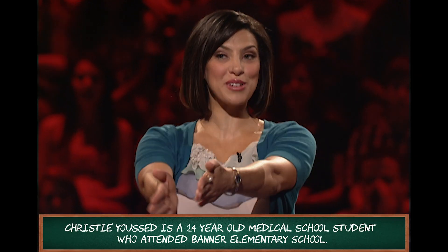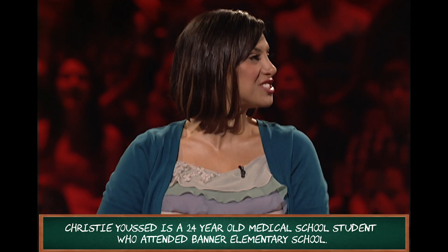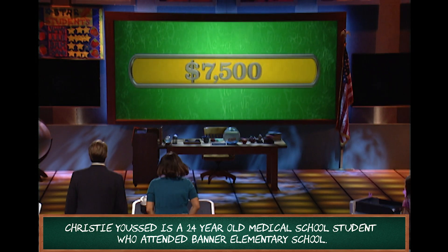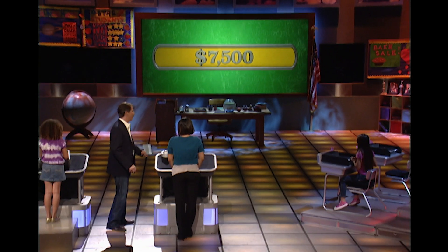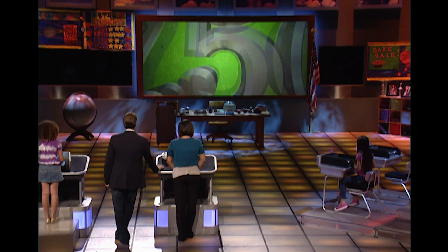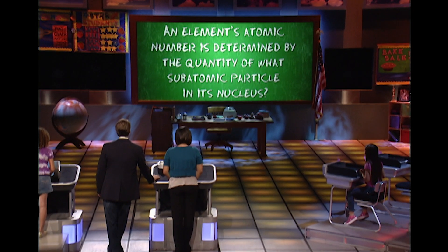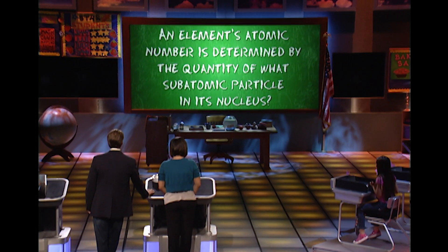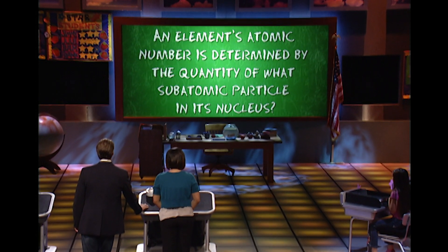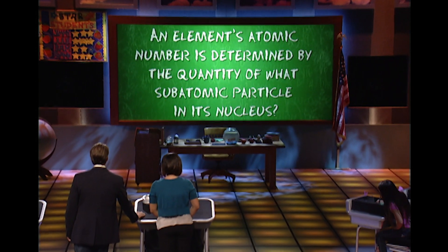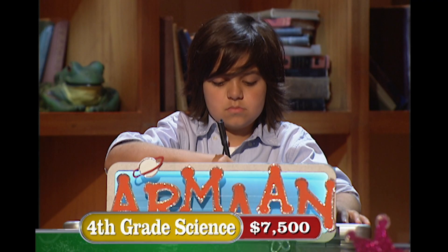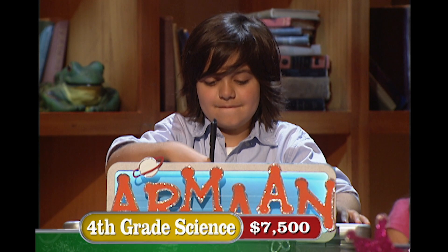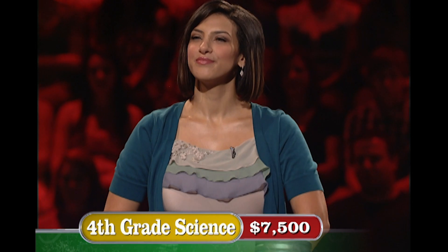Let's start going down the field I'm comfortable with, and let's do fourth grade science. For $7,500, the fourth grade science question is: An element's atomic number is determined by the quantity of what subatomic particle in its nucleus.